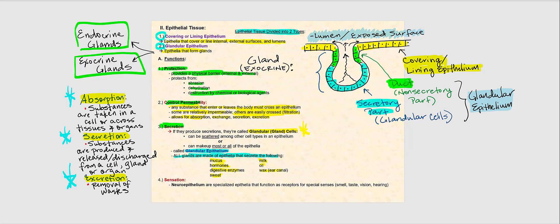The last function of epithelial tissue is sensation. We have what are called neuroepithelium — specialized epithelia that function as receptors for special senses such as smell, taste, vision, and hearing.